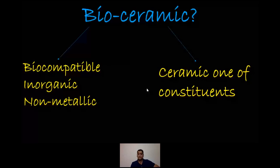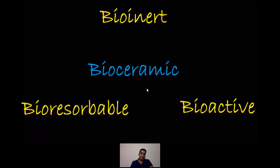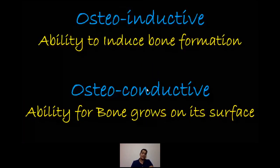What is a bioceramic? A bioceramic is a biocompatible, inorganic, non-metallic material that has a ceramic as one of its constituents. It's been used since the 1960s and 70s by the medical profession for prosthetic heart valves, joint replacements, and cochlear implants. To understand the properties of bioceramics, we need to understand three concepts: bio-inert, bio-resorbable, or bio-active. We also need to understand osteoinductive and osteoconductive — if a material is osteoinductive, it has the ability to induce bone formation by stimulating osteoprogenitor cells.